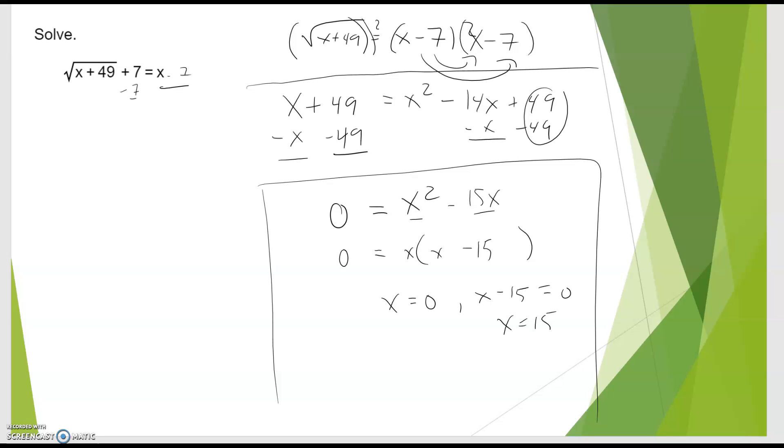Now, are they really solutions? That's the question. Because we have to be careful when we do things like squaring both sides. If I plug a 0 in here, do I get a solution? Remember, I'm taking the solution for x and plugging it in anywhere I see an x. And the answer would be no. Right? Because you get the square root of 49 plus 7 does not equal 0. So he's out.